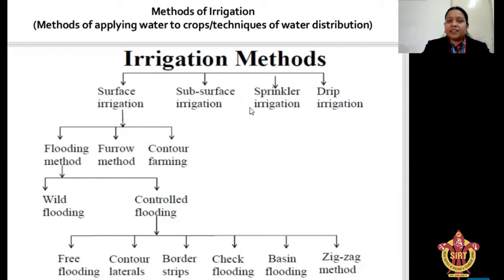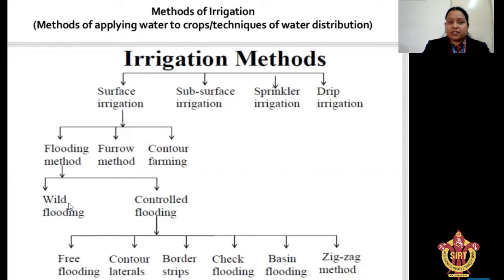We divided it further into more classifications of irrigation due to advancement in irrigation systems. The surface method is divided into flooding, furrow, and contour irrigation. Surface irrigation is basically divided into first, wild flooding; second, controlled flooding. Controlled flooding is subdivided into free flooding, contour laterals, border strip flooding, check flooding, basin flooding, and zigzag flooding. After all these, we will also learn about sprinkler and drip irrigation.